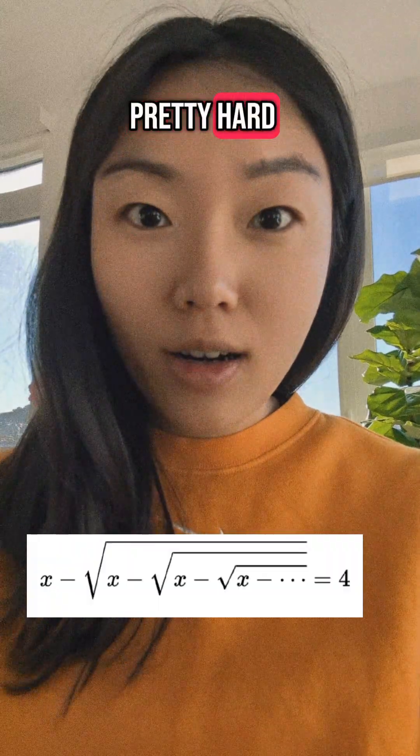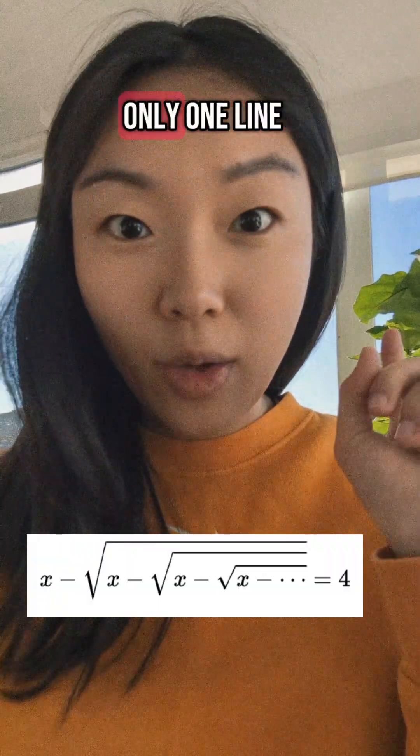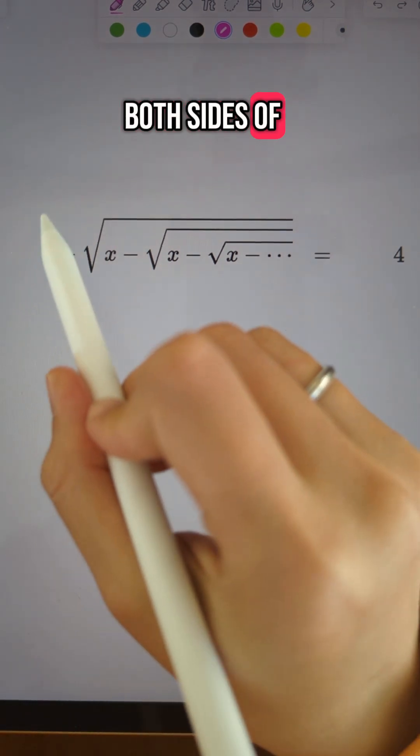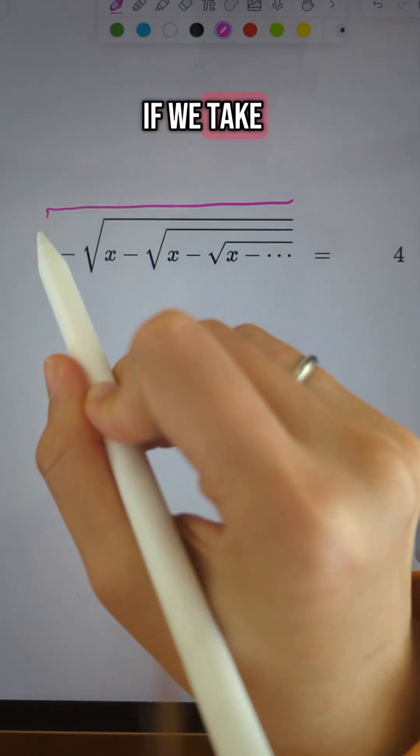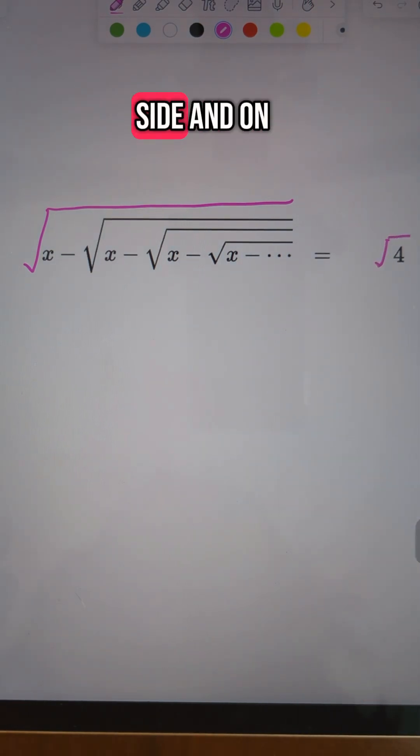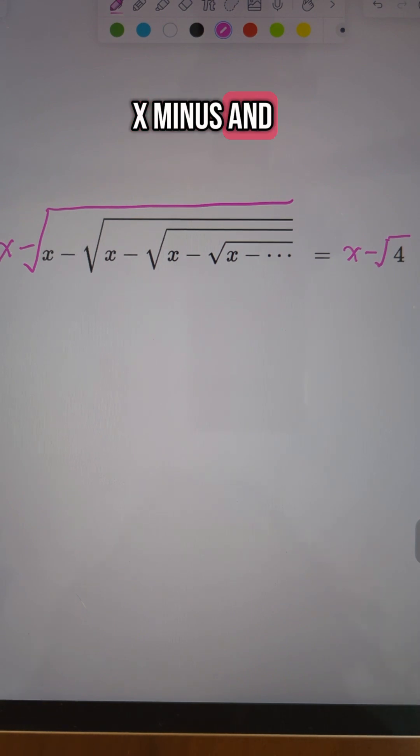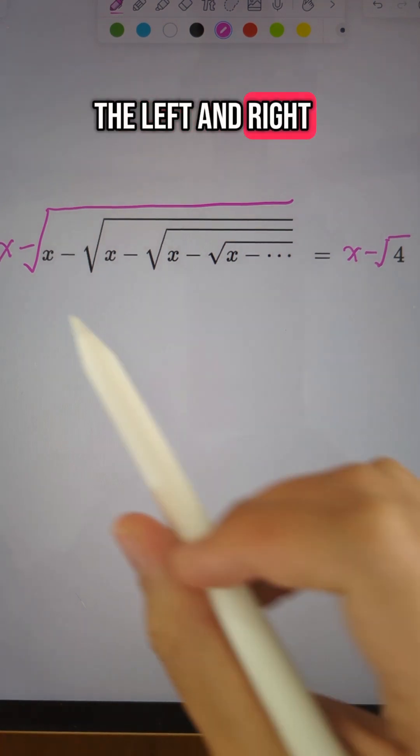This problem looks pretty hard, but it can be solved using only one line. Let's do some simple manipulations to both sides of the equation. If we take square root on the left-hand side and on the right-hand side, and also apply x minus on the left and right, it's still an equation. However, on...